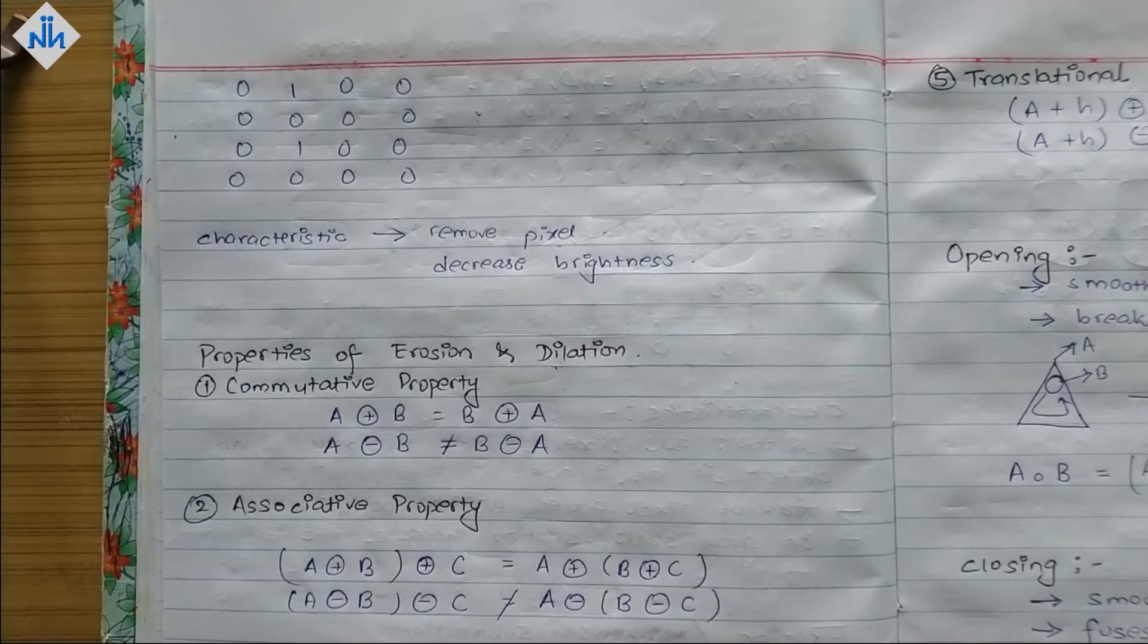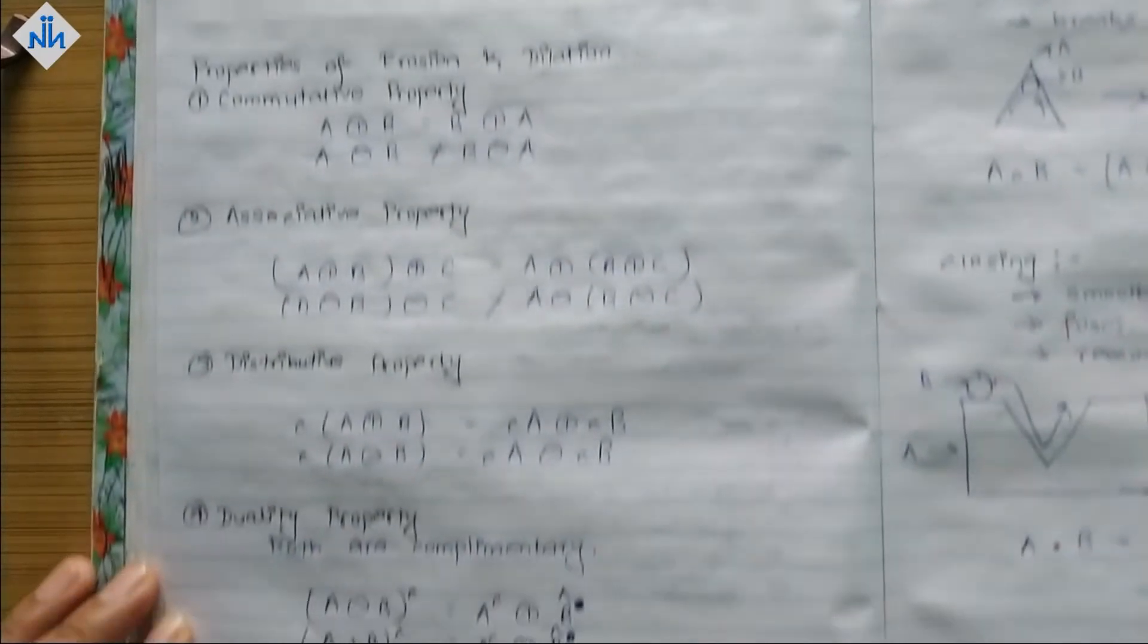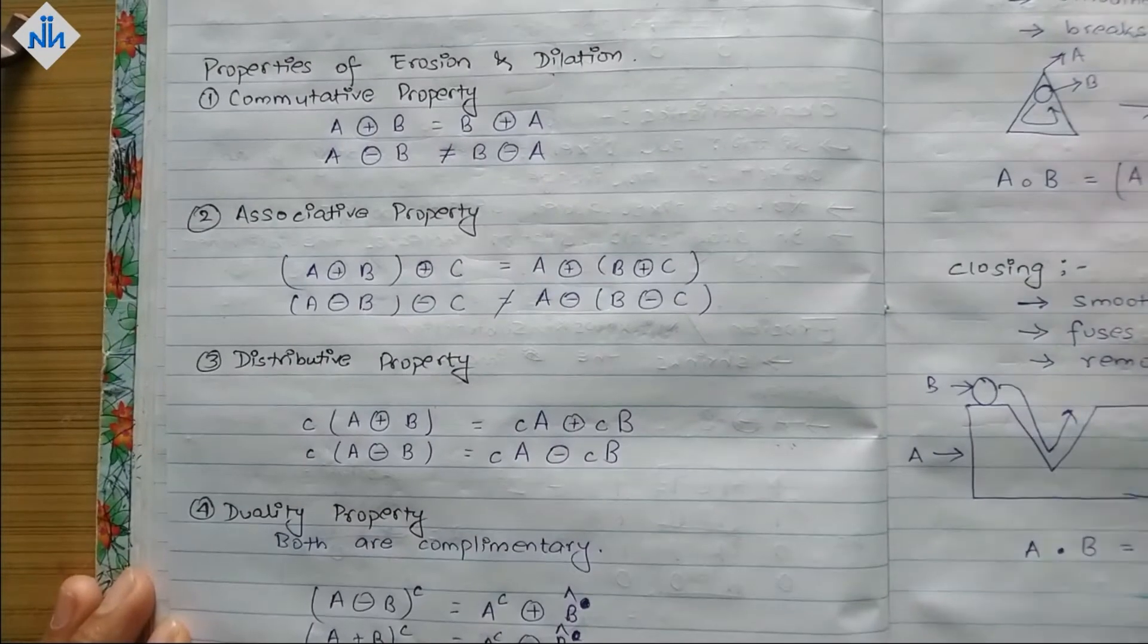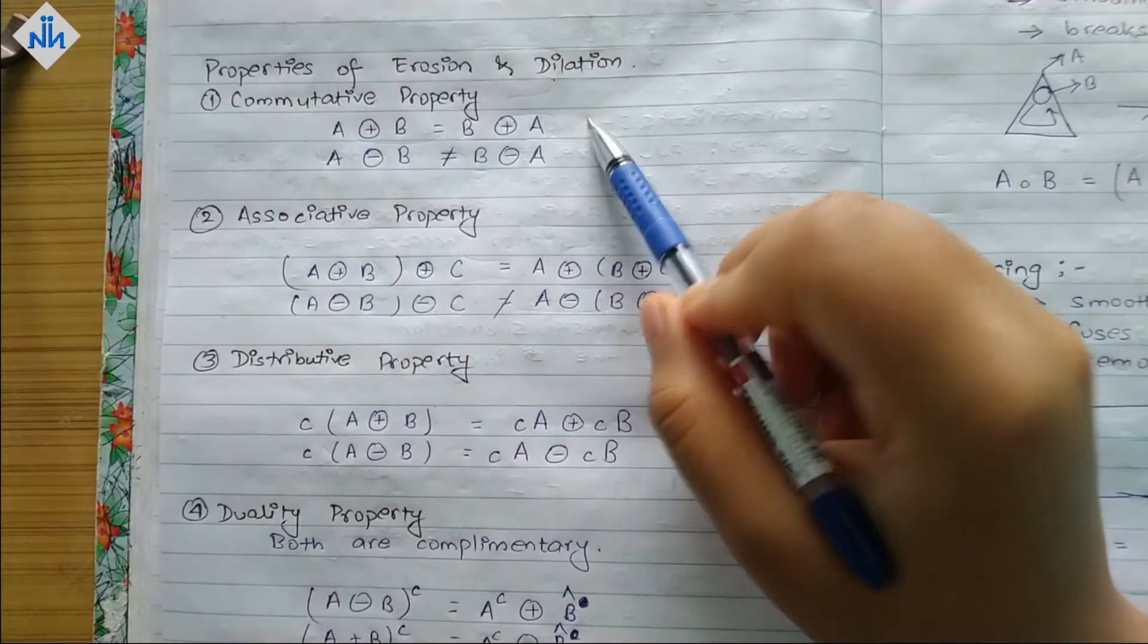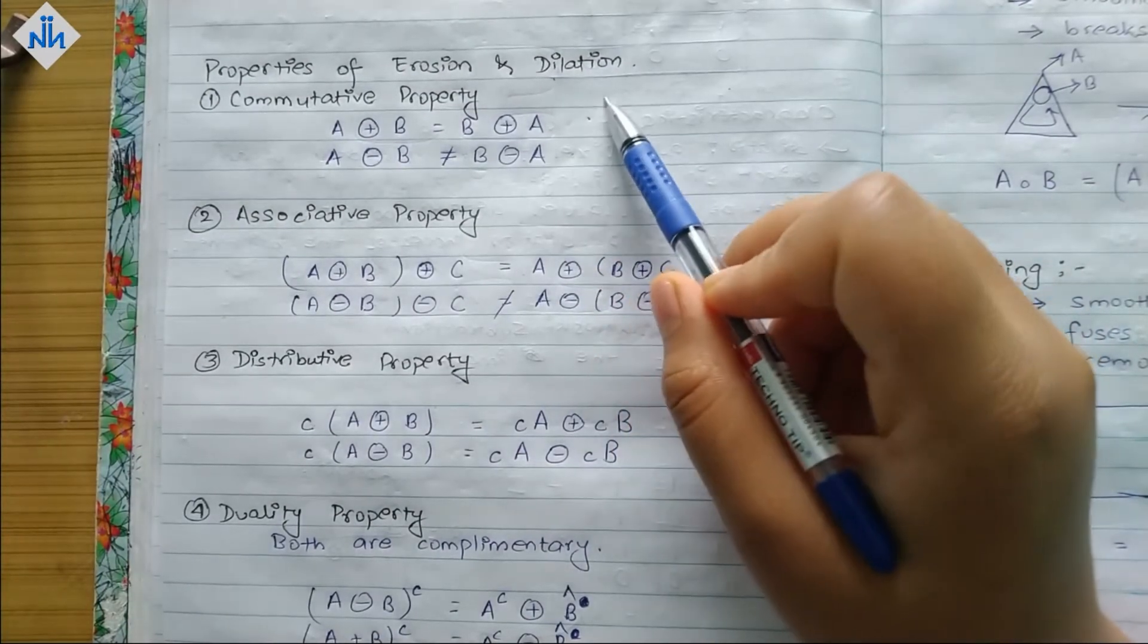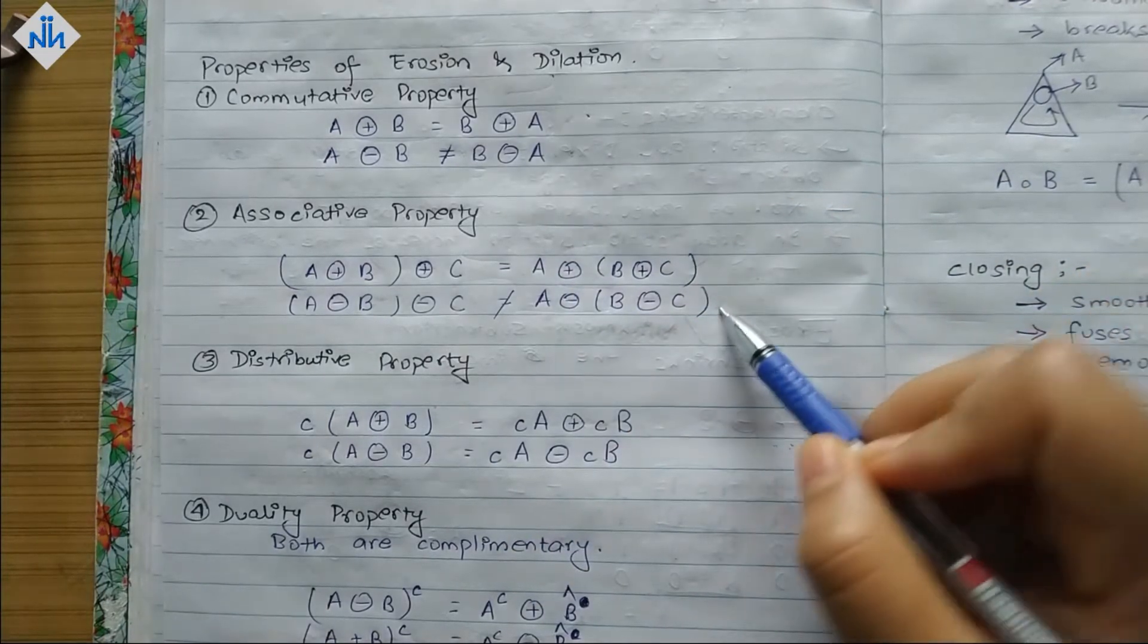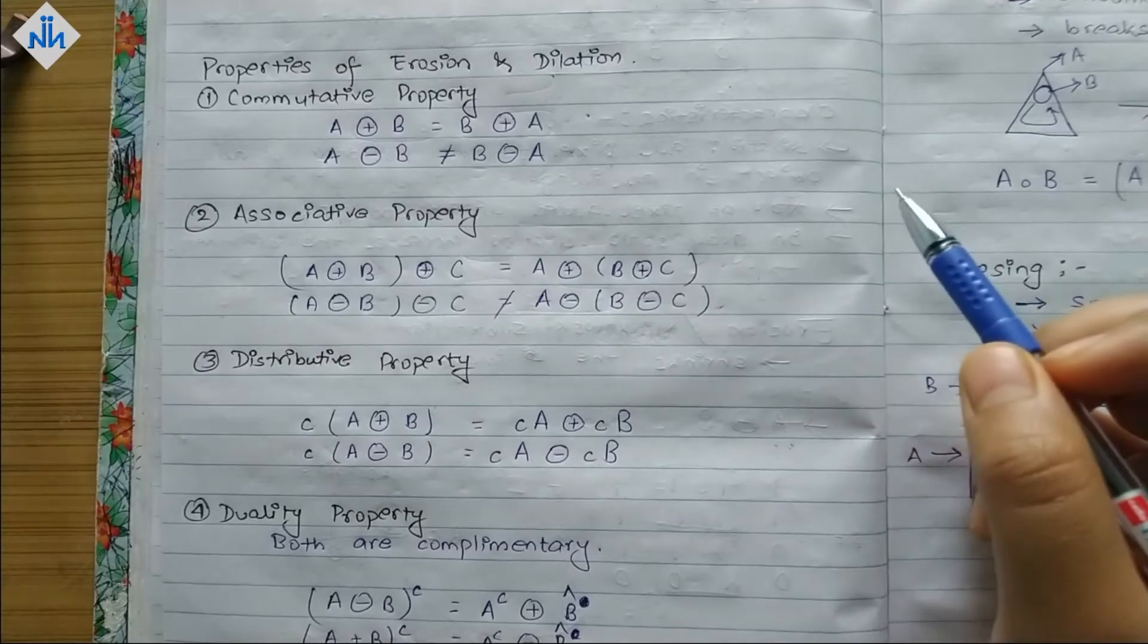Now let's look at properties of erosion and dilation both. So some of the properties are commutative property. It does not hold for erosion. It does hold for dilation. After that we have associative property. Similarly it does not hold for erosion. It holds for dilation.